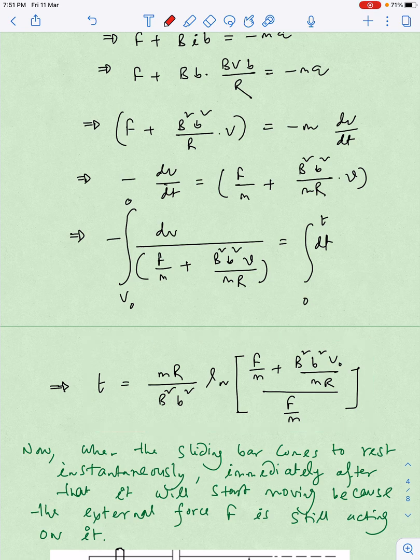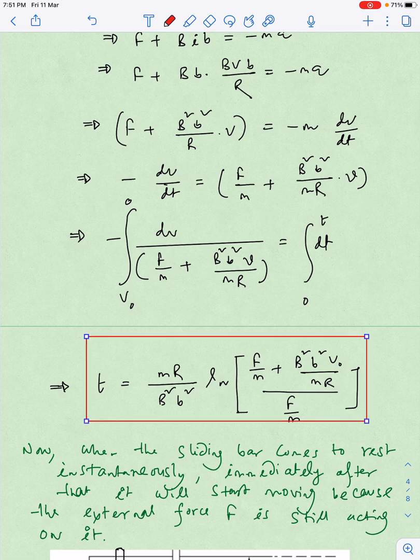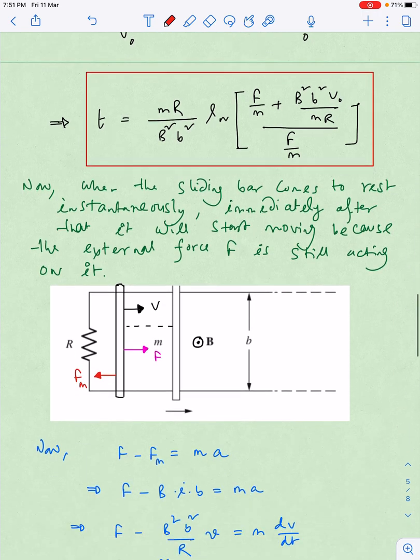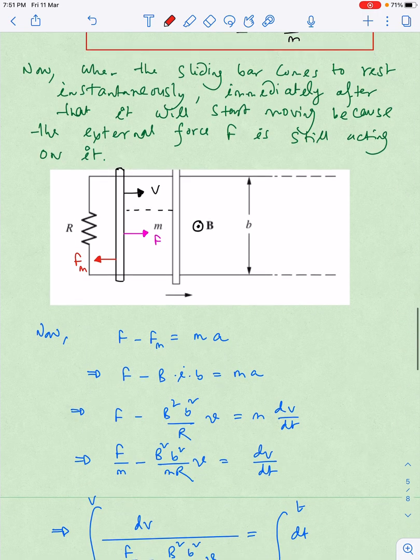This is a very significant result which will give us specifically the time after which the rod is coming to rest. Now I will move further. When the rod is at rest but the constant external force has not stopped, it is still acting. Because of that, the rod will again pick up speed in the rightward direction.